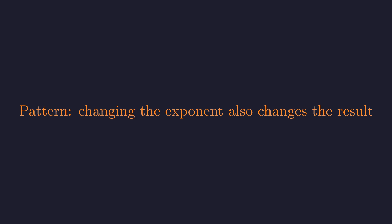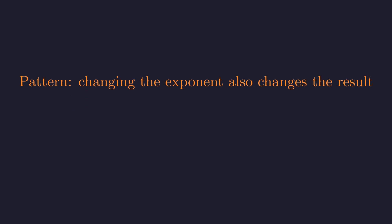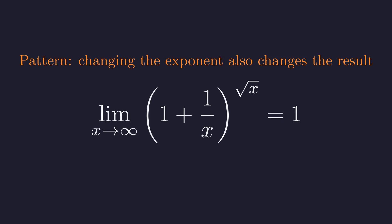So changing the numerator in the base changes our answer. But what if we change the exponent instead? Let's try one more variation. Here's the twist. 1 plus 1 over x raised to the square root of x actually does approach 1. Same base approaching 1, but now the exponent grows more slowly. It's square root of x instead of x. And this time, we get 1 as our answer.